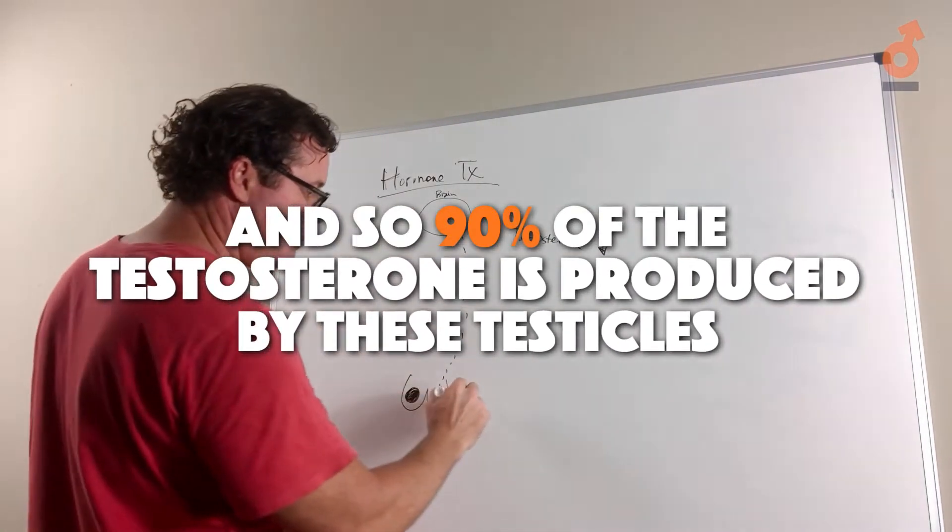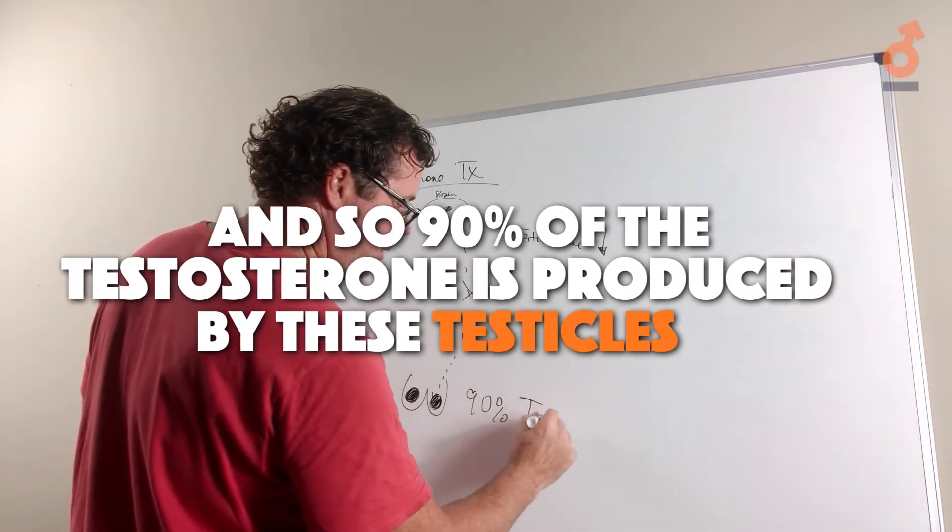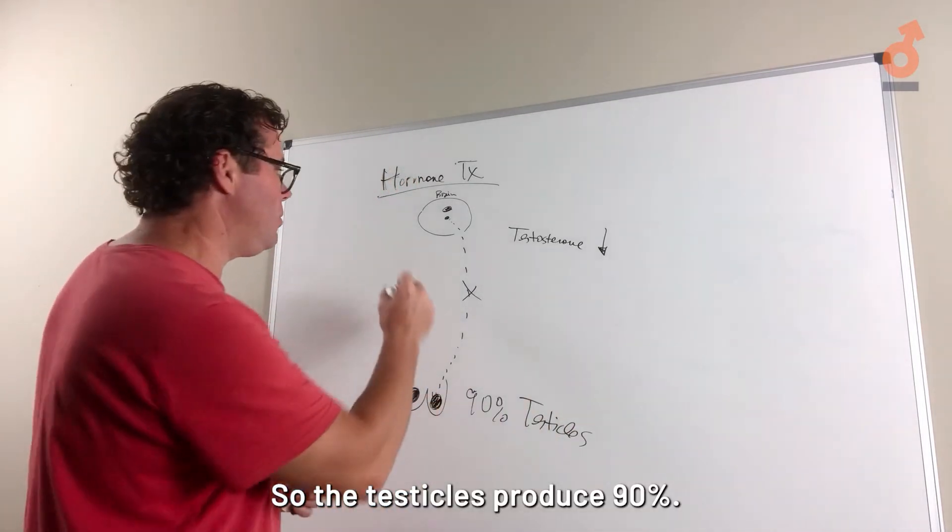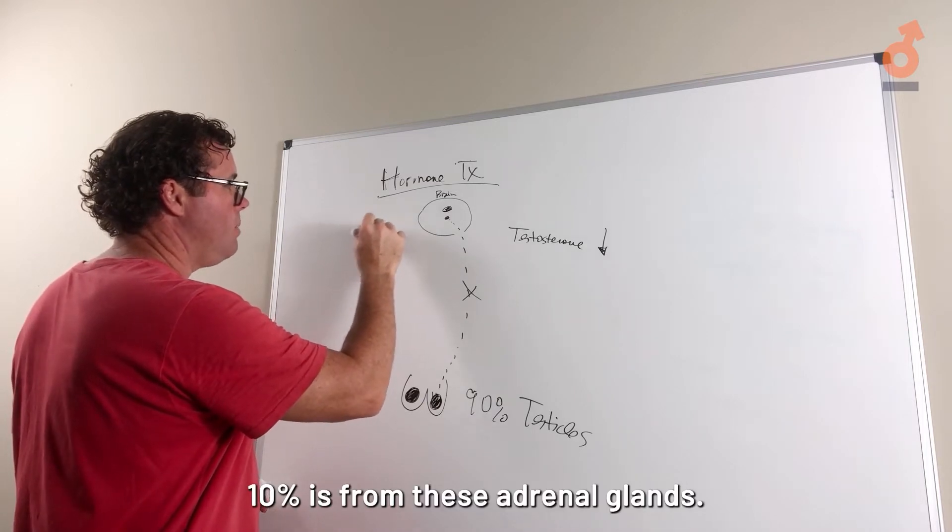90% of the testosterone is produced by the testicles. The other 10% is from the adrenal glands.